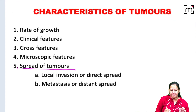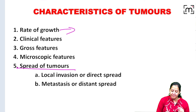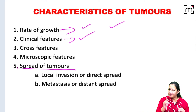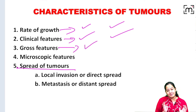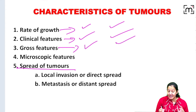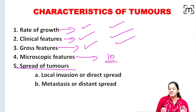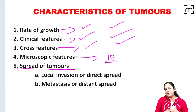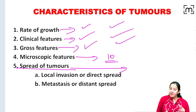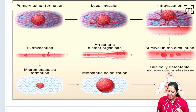Based on spread of tumours: benign tumours are slow growing; malignant are fast growing. Benign are usually asymptomatic; malignant are symptomatic. Benign are oval, spherical, well circumscribed, and compress surrounding tissue; malignant invade surrounding tissue without boundaries. There are two types of spread: local spread, where the tumour invades the surrounding parenchyma, and distant spread, where tumour cells enter blood vessels and travel to other organs.